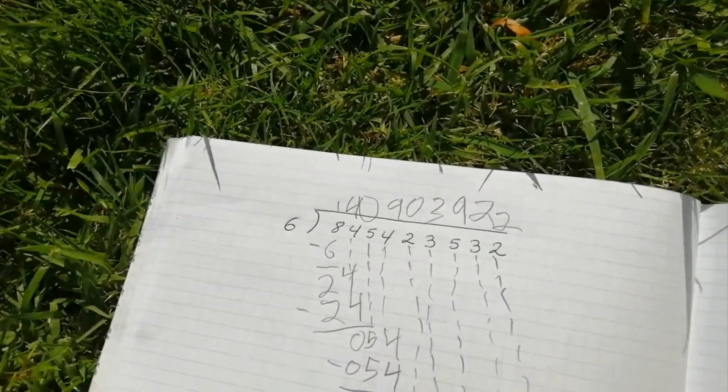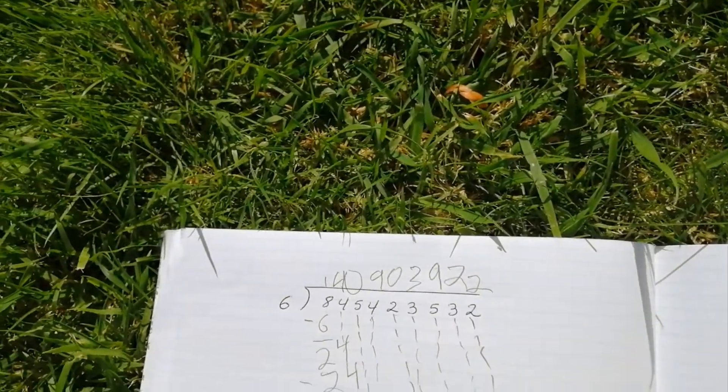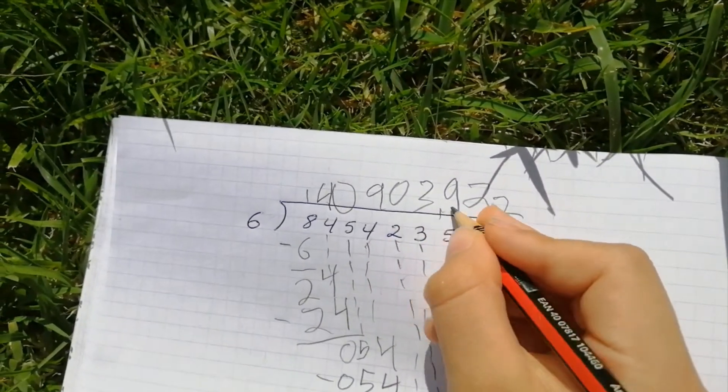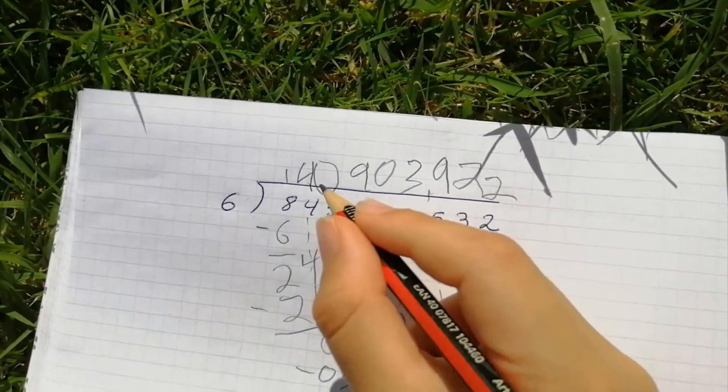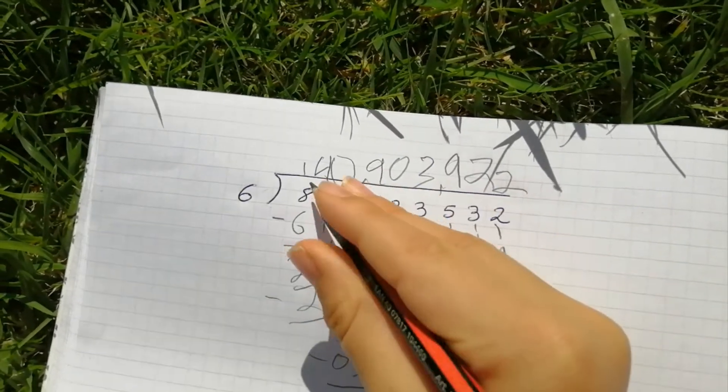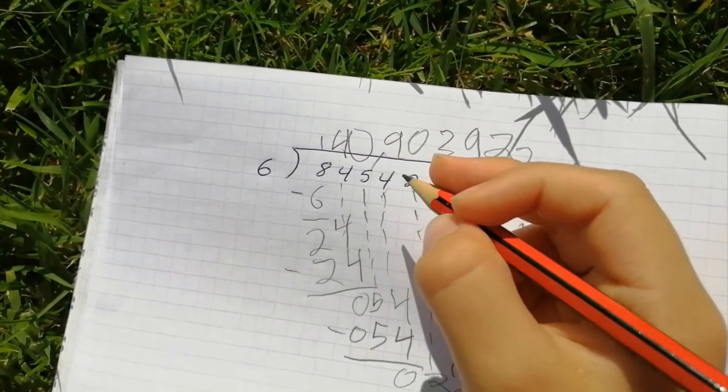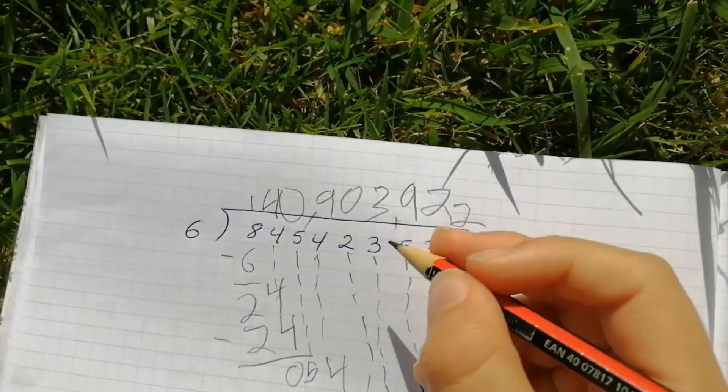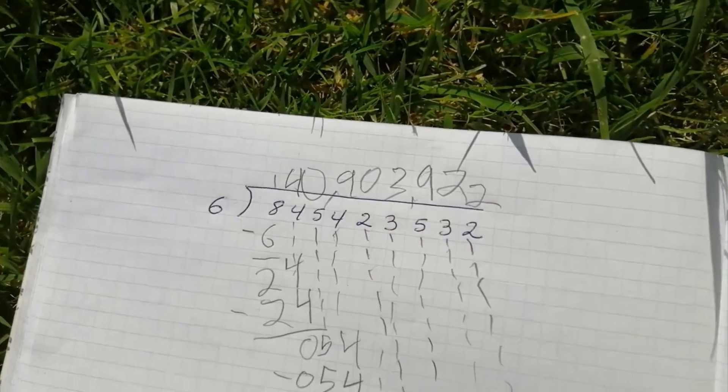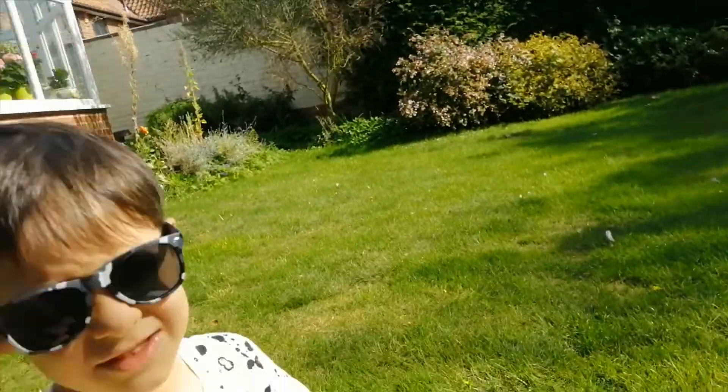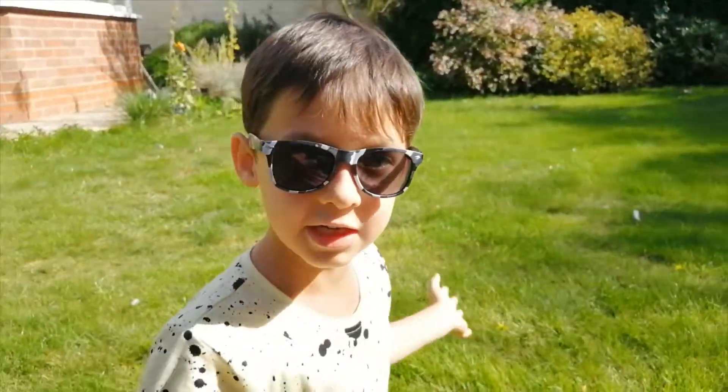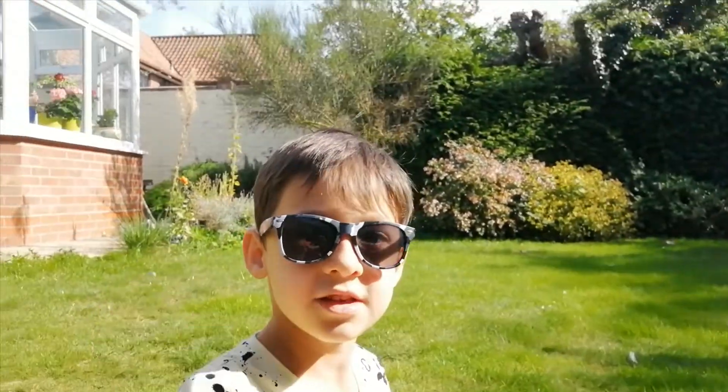And we have to put the things. So it's a hundred and four. Is that forty? A hundred and forty million, nine hundred and three thousand, nine hundred and twenty-two. That's a really big number. See you soon.